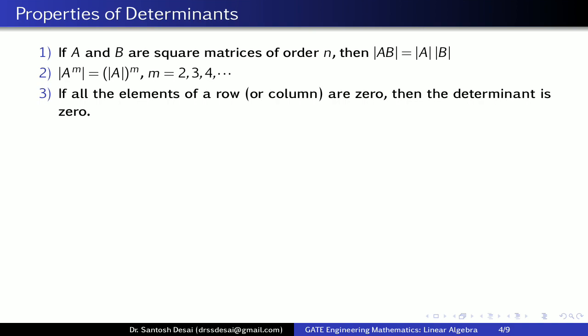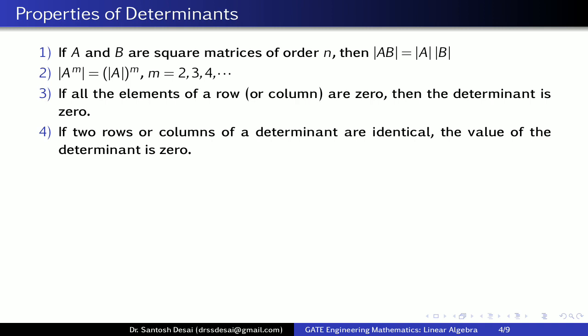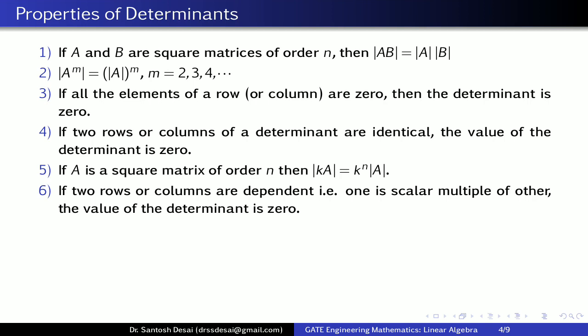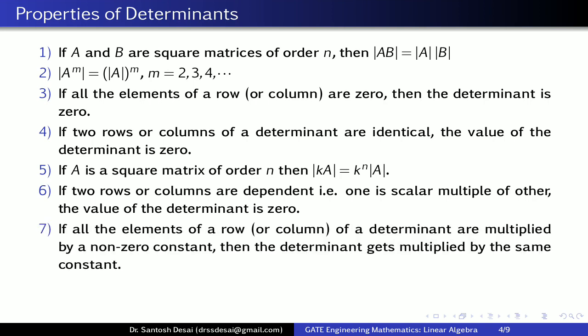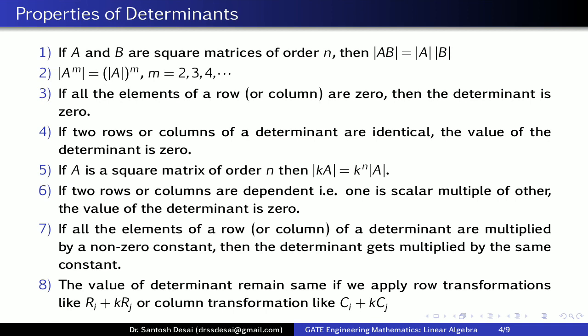Next: if all the elements of a row or column are 0, then the determinant is 0. If two rows or columns of a determinant are identical or the same, the value of the determinant is 0. If A is a square matrix of order n, then det(kA) = k^n · det(A). If two rows or columns are dependent — meaning one is a scalar multiple of the other — the determinant is 0. If all elements of a row or column are multiplied by a non-zero constant, the determinant is multiplied by that same constant. The value of the determinant remains the same if we apply row transformation Ri → Ri + k·Rj or column transformation Ci → Ci + k·Cj.